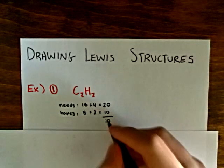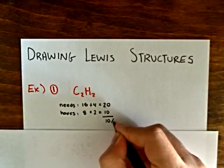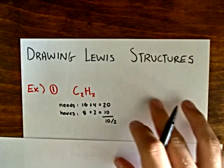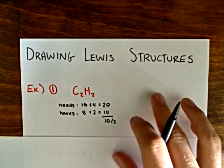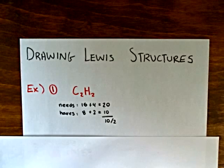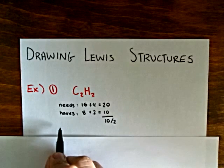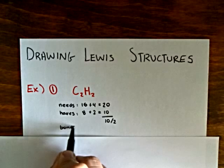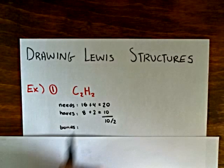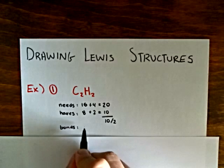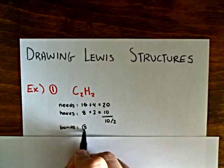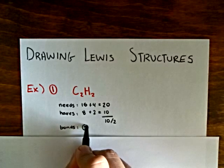We divide that number by 2, and that gives us the number of bonds that this species will have. In this case, that will be 5 bonds.